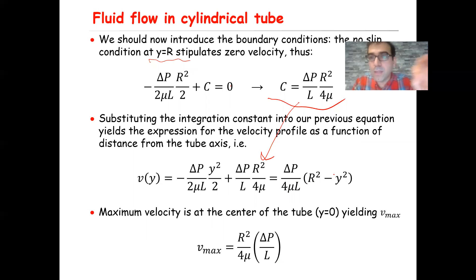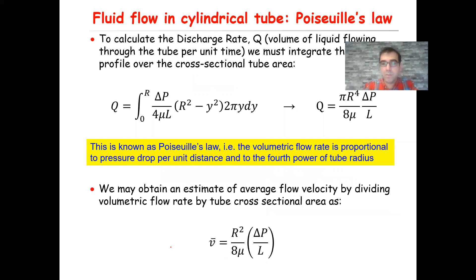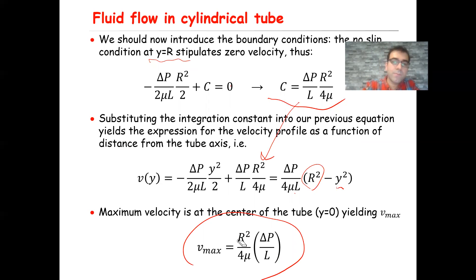So that is the velocity profile through this single tube. The maximum velocity occurs at the center where y equals zero, so v_max equals R²/(4·mu) times delta P/L.